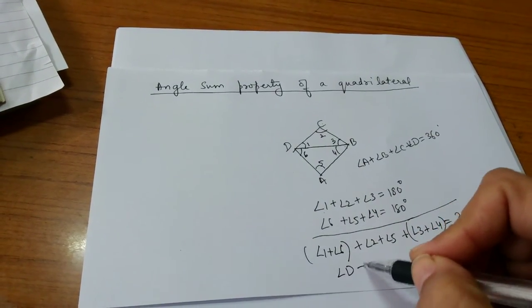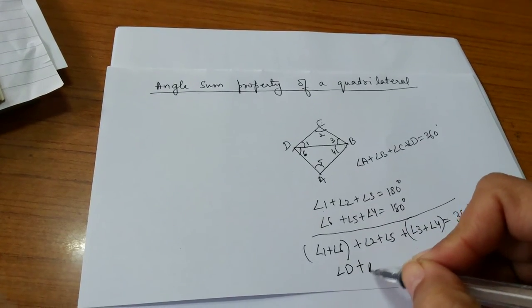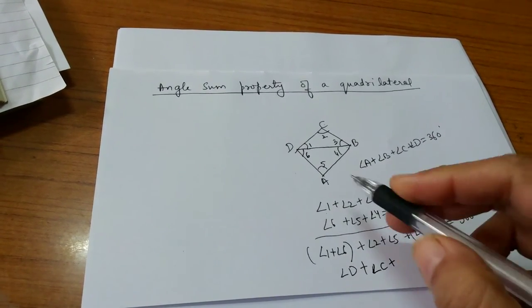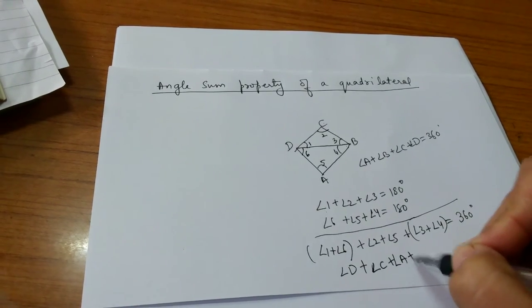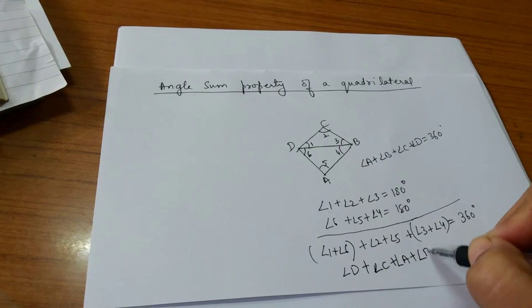It is angle D. Angle 2 is angle C. Angle 5 is angle A, and angle 3 plus angle 4 is angle B.